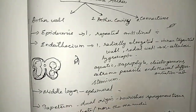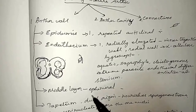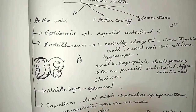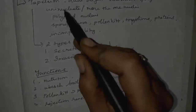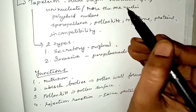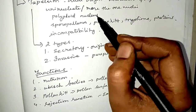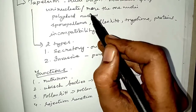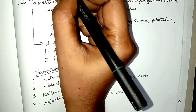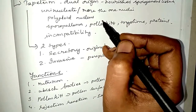The middle layer consists of two to three layers which are ephemeral — they disintegrate or get crushed at maturity. Inner to the middle layer is the tapetum, the innermost layer of the anther wall. It attains maximum development at the tetrad stage of microsporogenesis. Tapetum is dual in origin — partly derived from the peripheral anther wall and partly from the connective tissue. It nourishes the developing sporogenous tissue, i.e., the microspore mother cells and microspores.